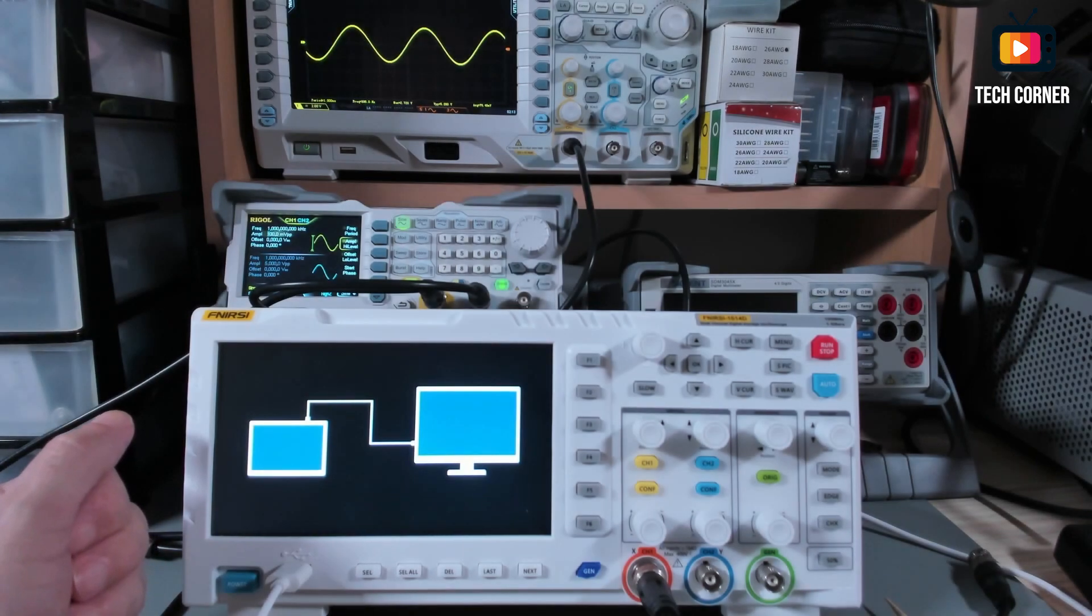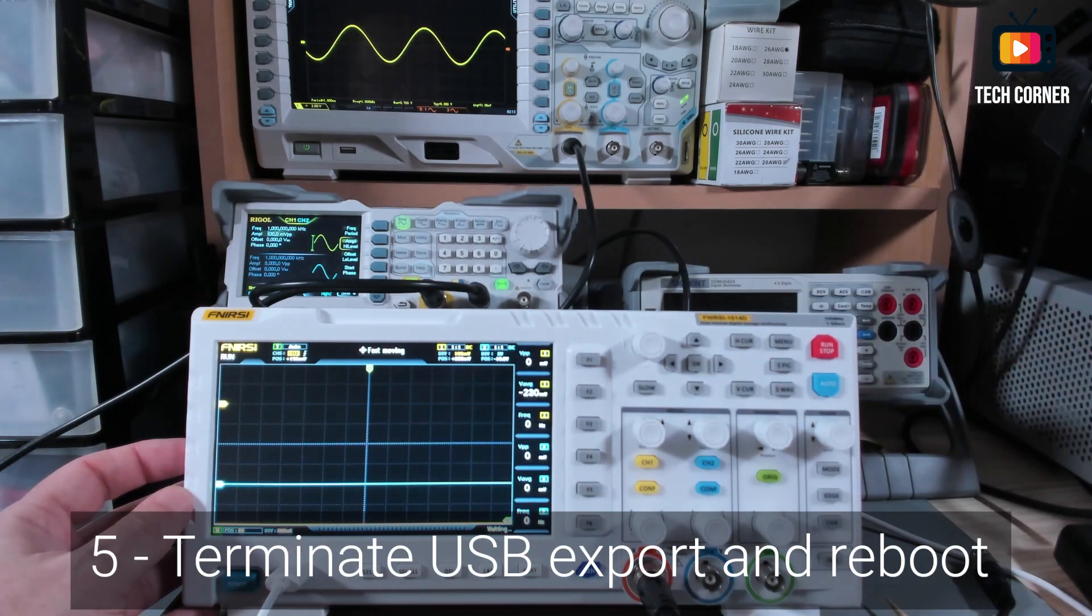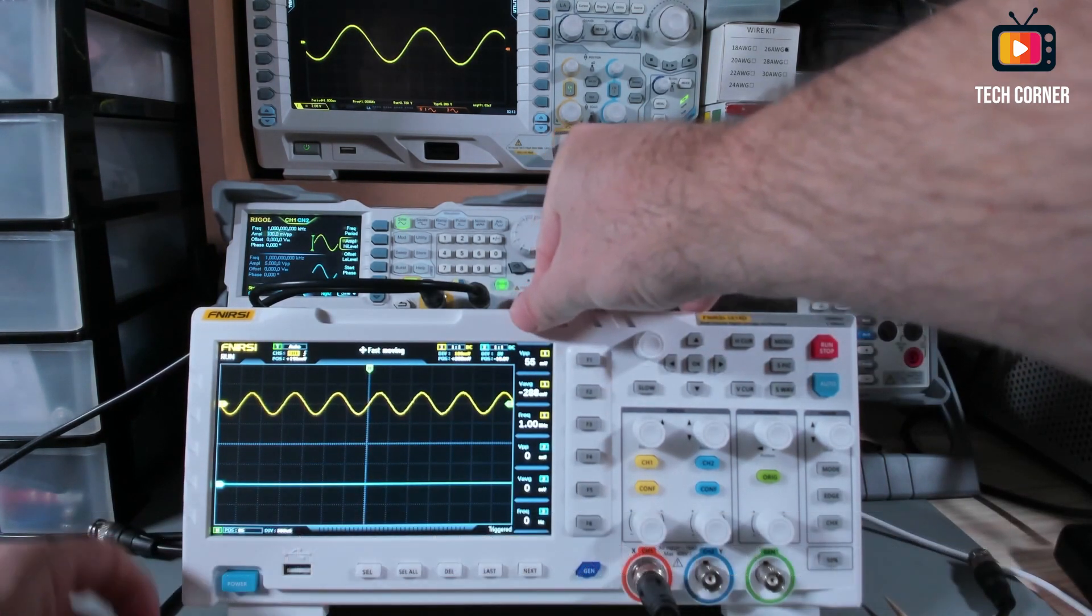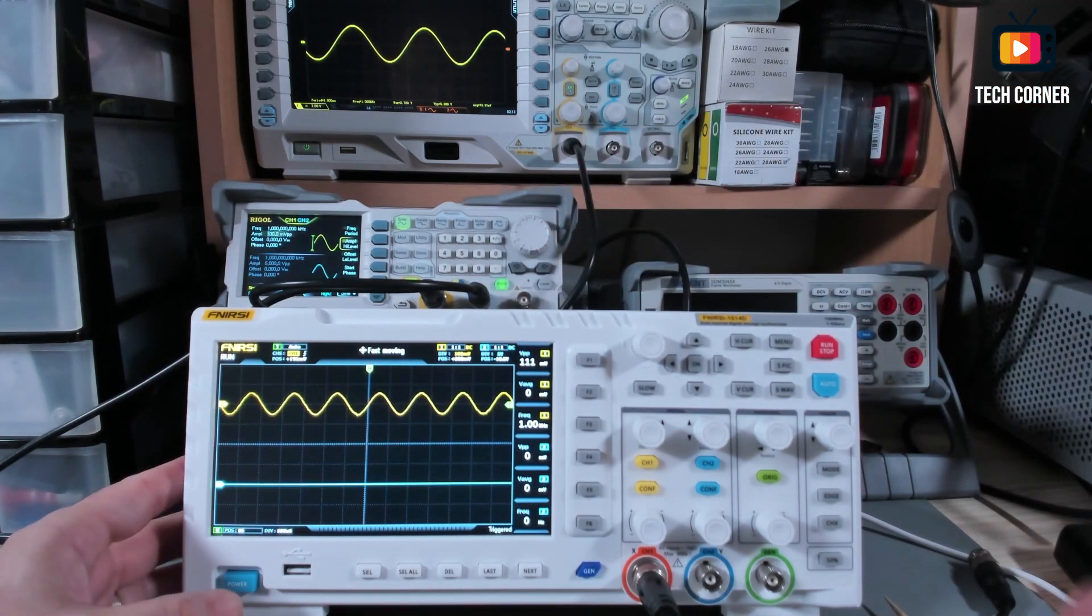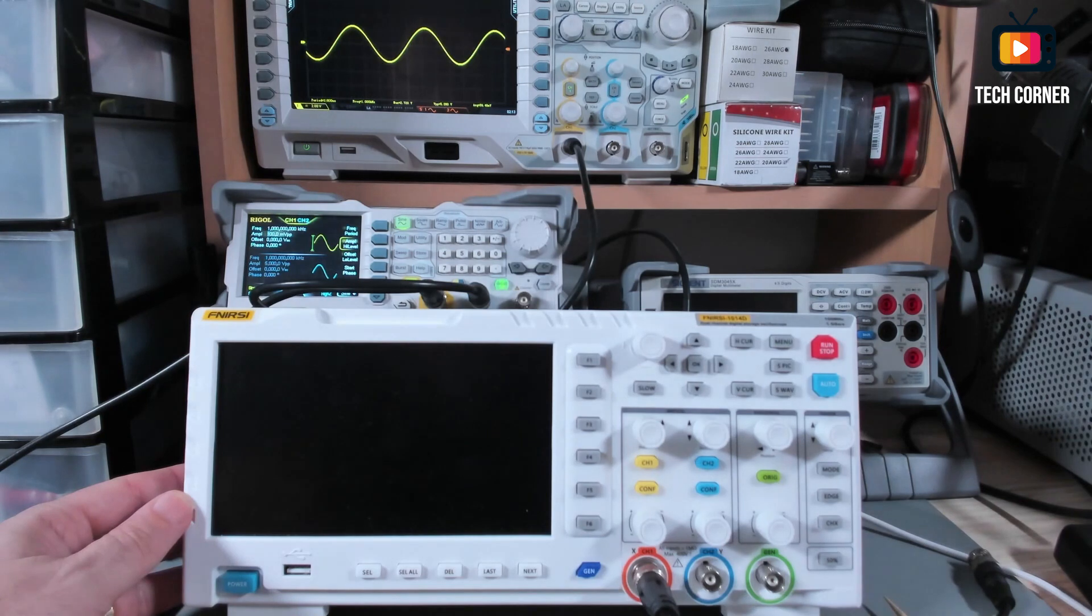So we copied the fsi-1014.bin file to the oscilloscope now we terminate the connection with the PC we remove the USB and we power off the oscilloscope.